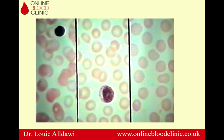Which part of the blood film should you look at? To the right is the thin part of the blood film where red blood cells are spaced apart and there is no preservation of central pallor — don't look here. To the left is the thick part where red blood cells are overlapping each other — don't look there either. In the middle, the center of the blood film, you can see good preservation of central pallor with some degree of overlapping. This is the area we usually look at.